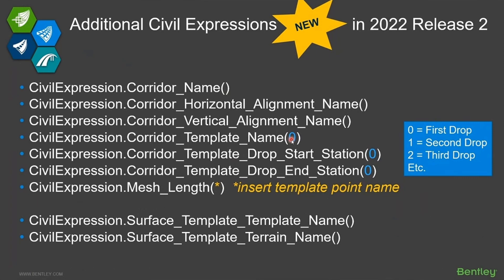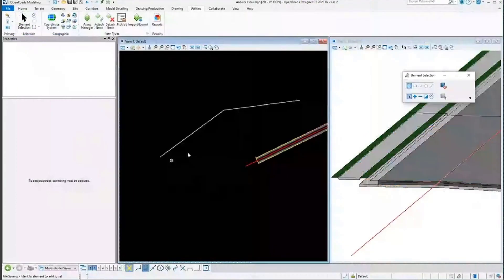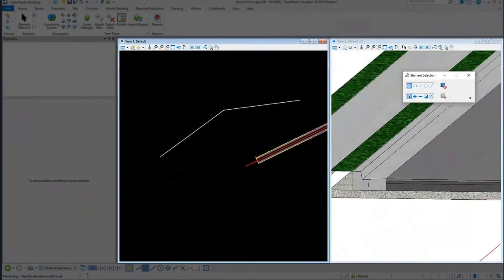The last piece is something called mesh length. What this allows you to do is put this on the corridor and return a length of that mesh based on a particular template point. Let's jump over and look at the software to see this in action.